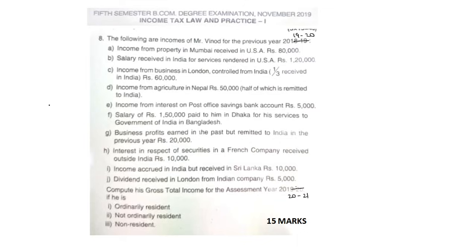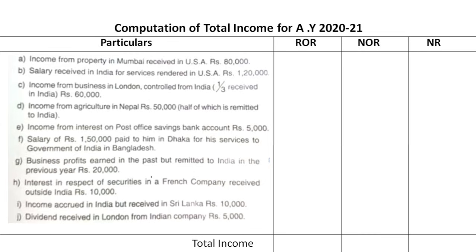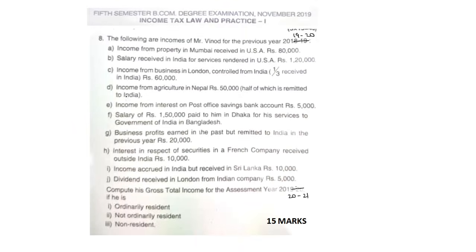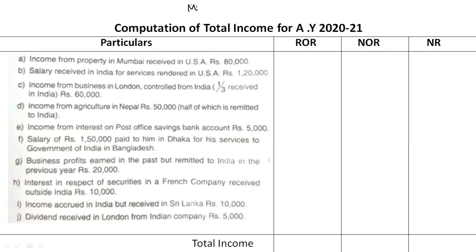In the 2019 question paper, residential status is 15 marks. The problem is: the following are the income of Mr. Vinod for the previous year 2019-20. Compute his gross total income for the assessment year 2020-21 if he is an ordinarily resident, not ordinarily resident, and non-resident. So each income is taxable in this case. Mr. Vinod computation of total income for the assessment year 2020-21.